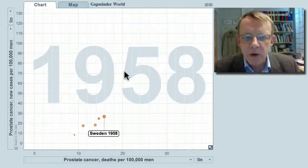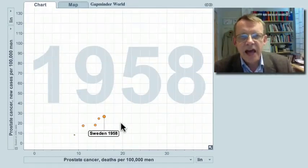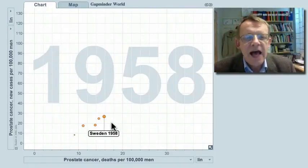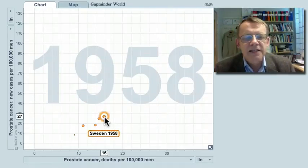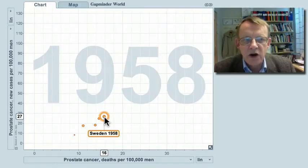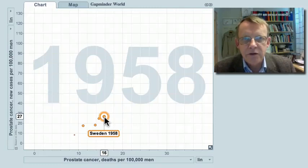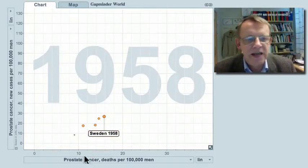Now, let me compare my own country, Sweden. Here we have data for Sweden and some other countries for many years. In 1958, in Sweden, there was a risk of 27 in 100,000 to get the diagnosis and 16 in 100,000 to die. That is, about half of the men with this diagnosis died.